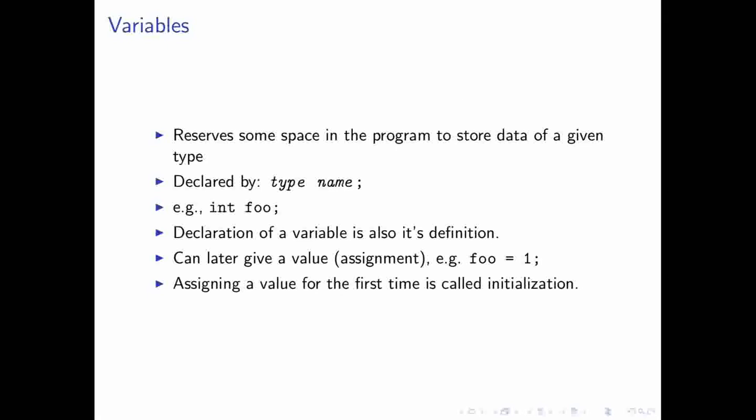We have as one kind of symbol what's called a variable, and the variable is basically the state of data. What you do whenever you declare a variable is you're basically telling the compiler, hey, reserve some space for the state of this variable. Variables have a type and a name. For instance, int foo is a variable declaration. Any time you declare a variable, you also define it as well. You can later assign a variable by using the assignment operator, and you can even use assignment during declaration as well. If you assign the variable for the first time, it's a special time called initialization.